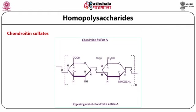Chondroitin sulfate A and C appear to be made of equimolar quantities of N-acetyl-2-amino-2-deoxy-D-galactose, D-glucuronic acid and sulfuric acid. Chondroitin sulfate B, also known as beta-heparin and more frequently designated dermatan sulfate, is the sulfate of a polysaccharide composed of L-iduronic acid and N-acetyl glucosamine.